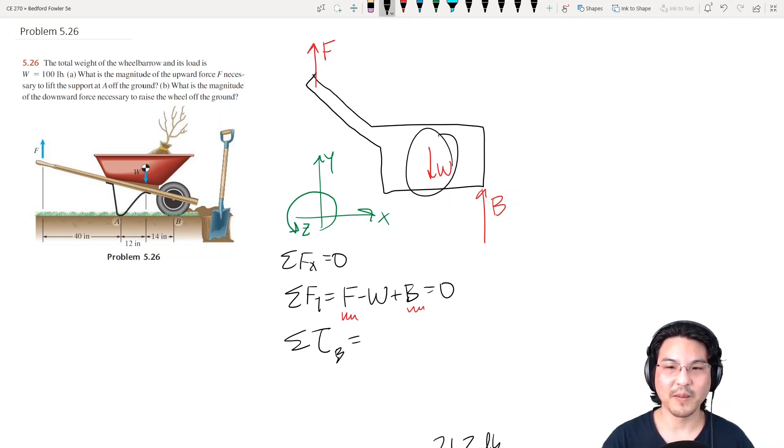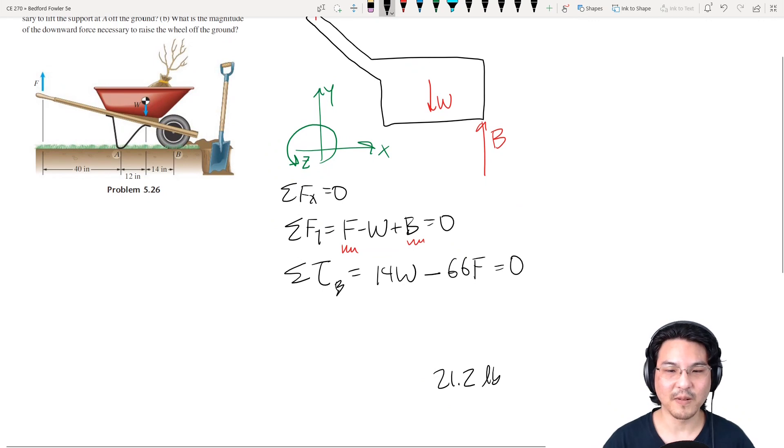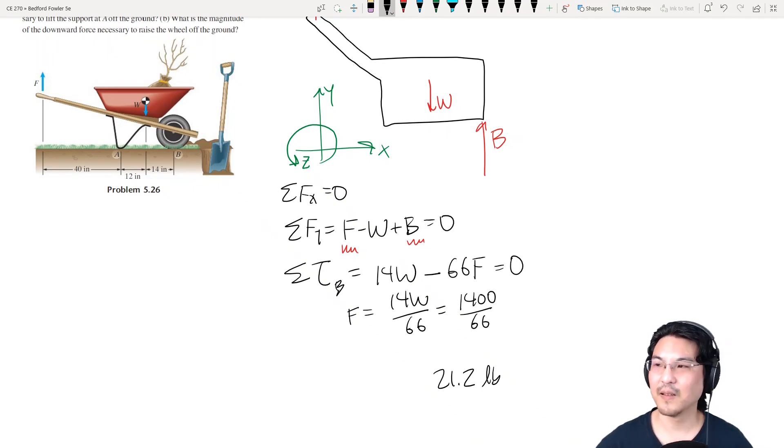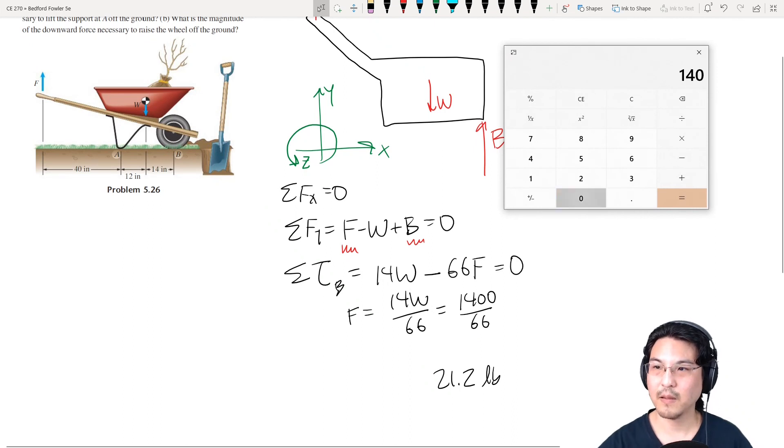The torque by this about this point would be counterclockwise in the positive direction. And here to here is 14. The torque by this force would be clockwise, which is negative. And here to here is 66. Okay, so then let's solve for F equals 1400 over 66. 21.2.